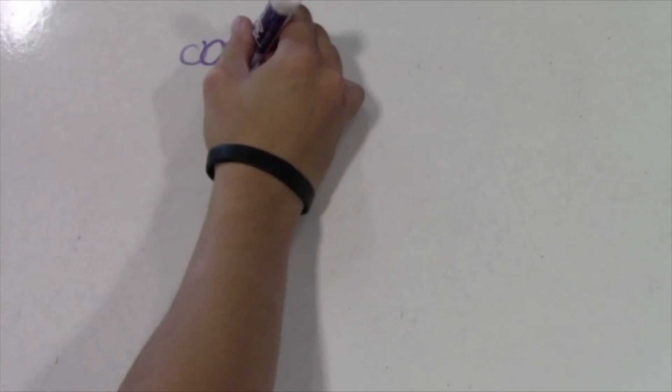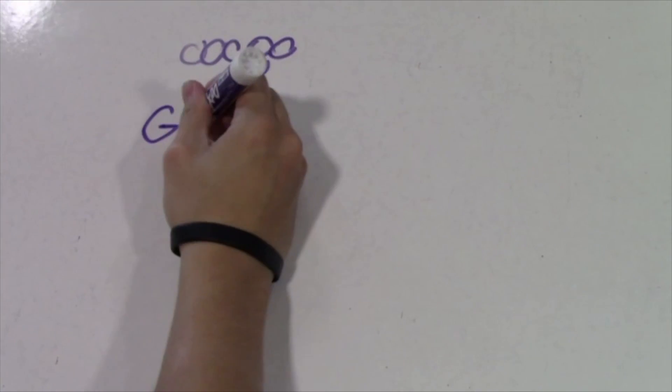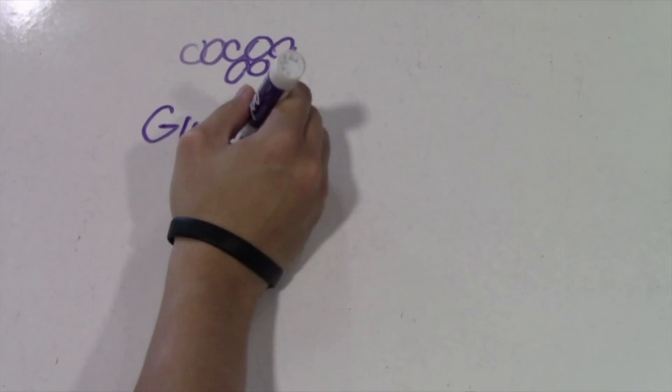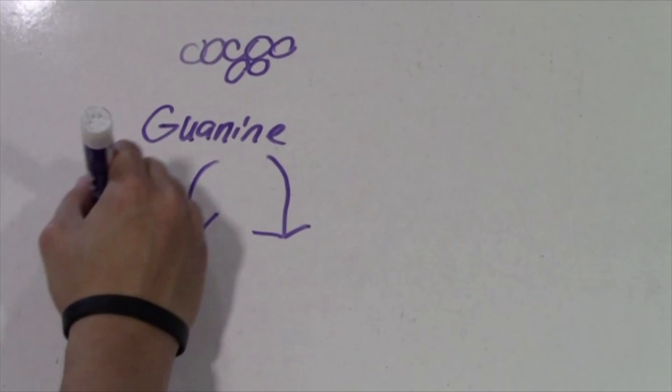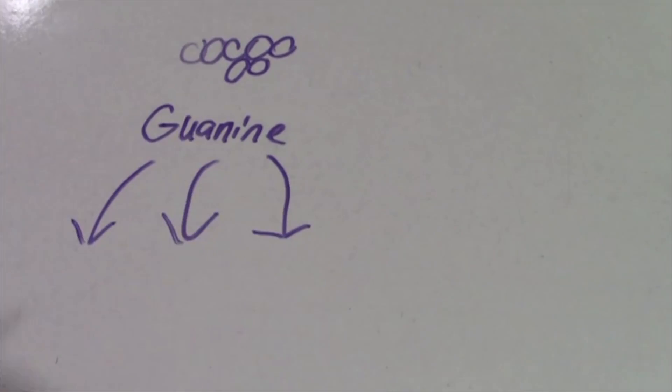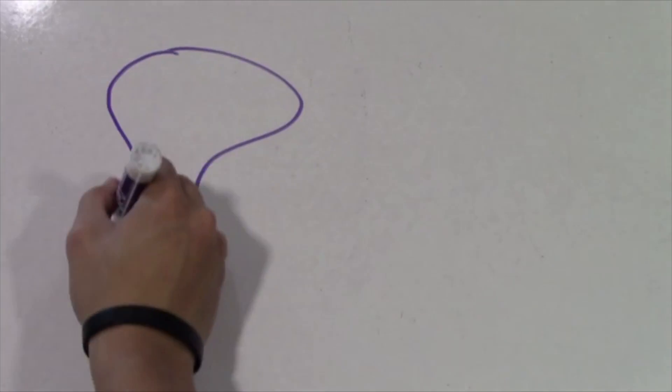Before we can start, let's give the definition of a G-protein. A G-protein is a guanine protein that activates different signals on different receptors inside a cell.